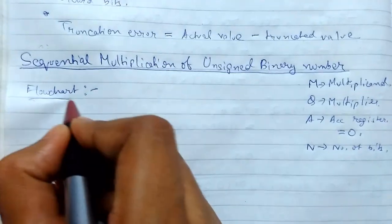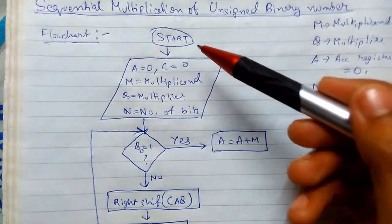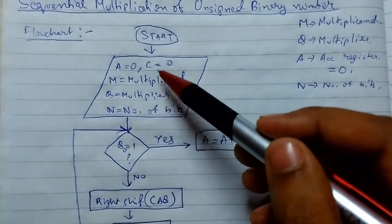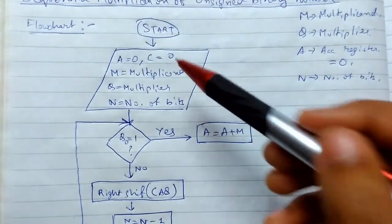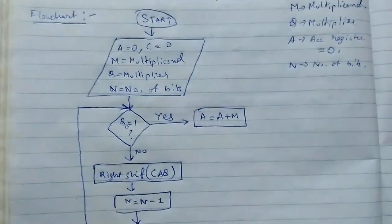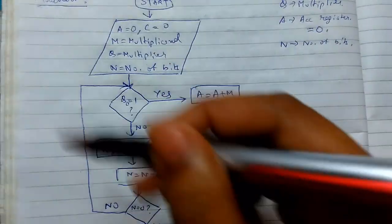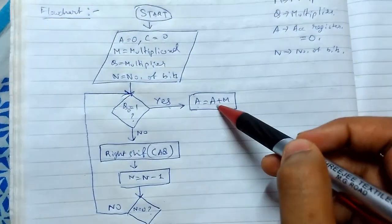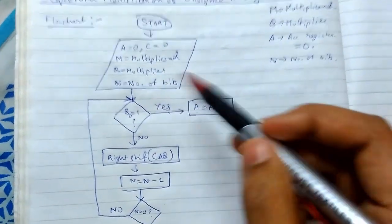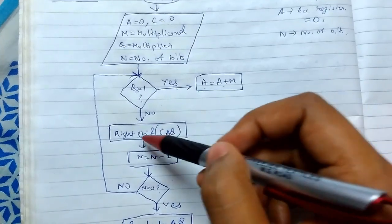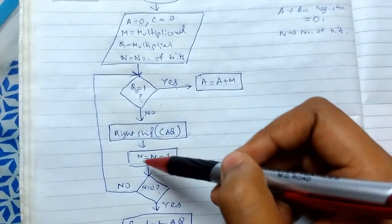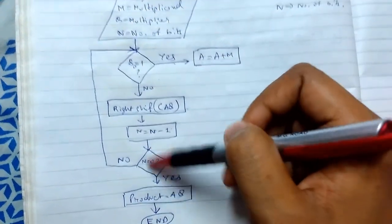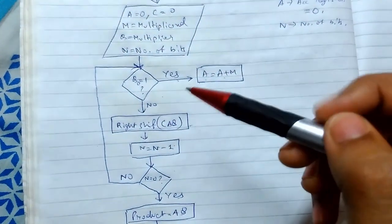There is a flowchart for this algorithm. I'll explain it: first we start, set accumulator A to 0 and carry C to 0, M is the multiplicand, Q is the multiplier, and N is the number of bits. We check Q0 — if yes, we do addition A = A + M; if no, we right shift in the order C, A, Q. Then N = N - 1. If N equals 0, we find the product; otherwise, repeat the process.